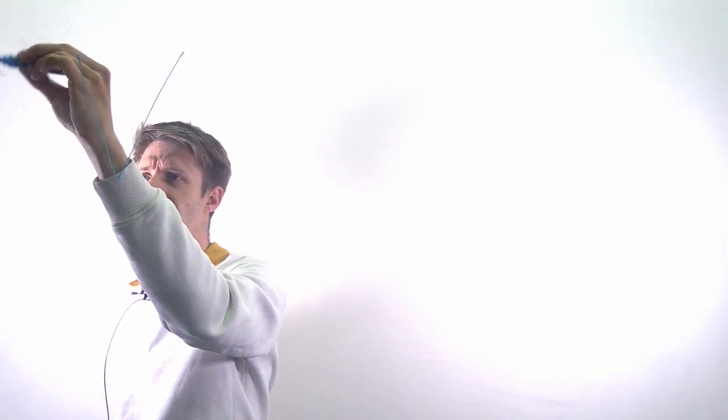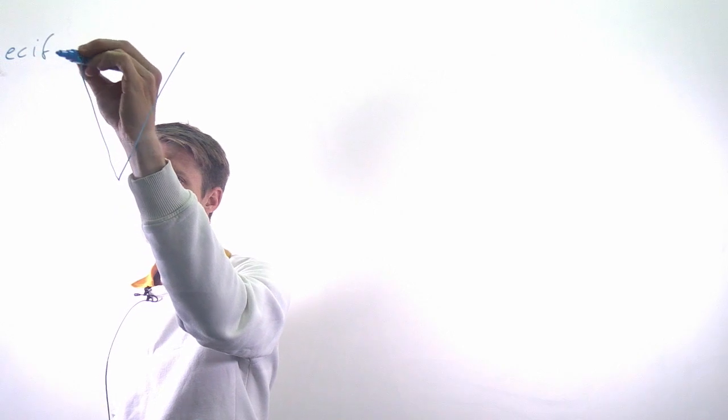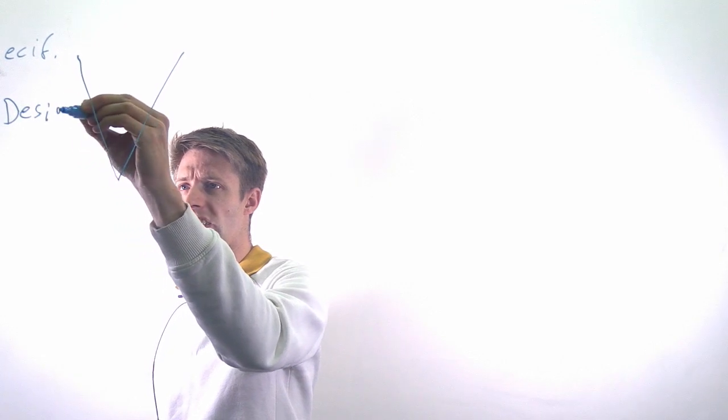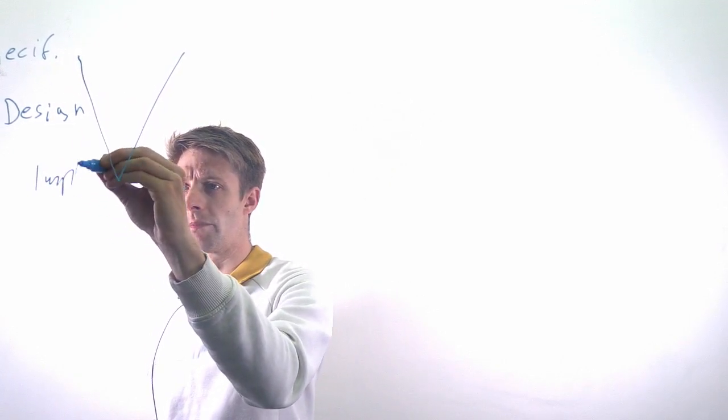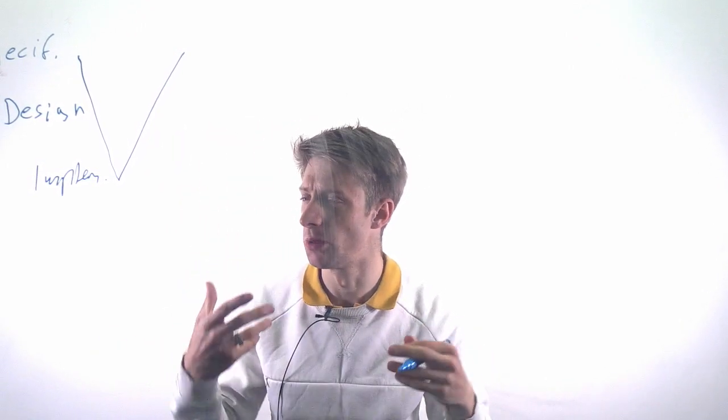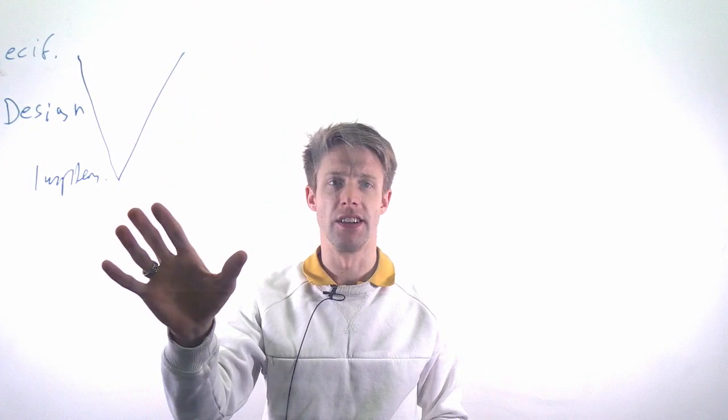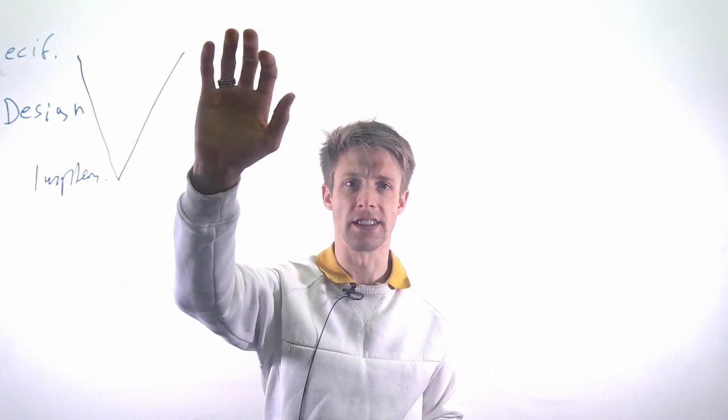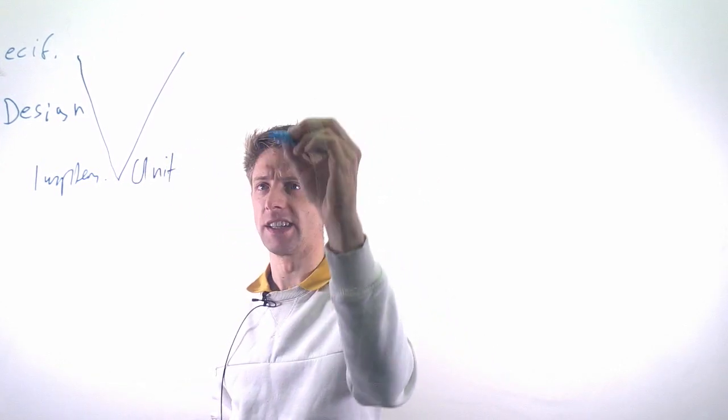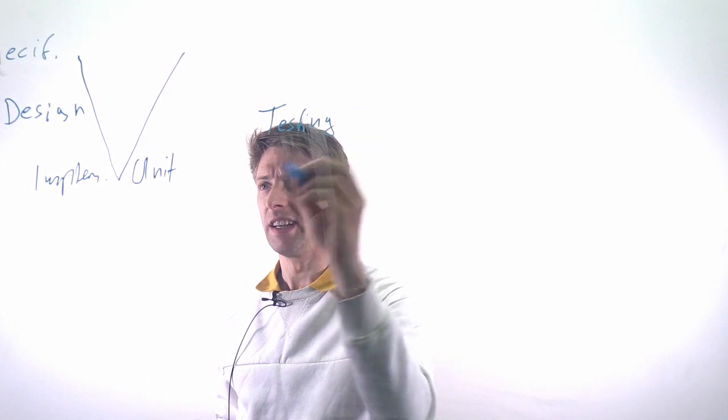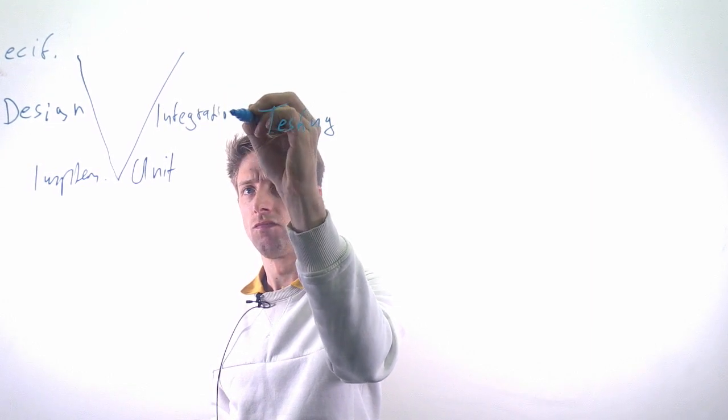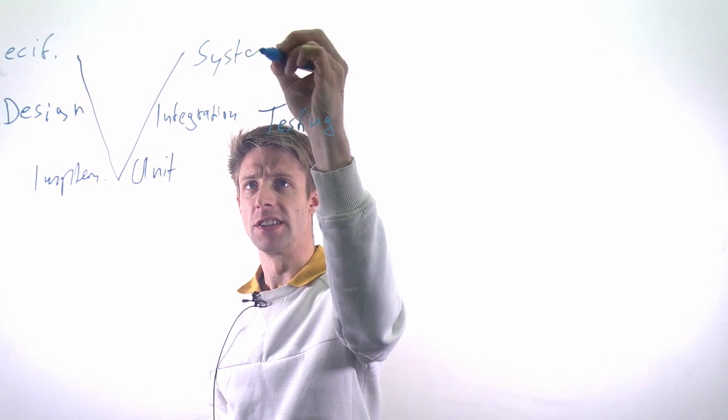So you have the specification on top, so you specify your requirements, your goals of the system, then you design, you build an architecture, and then you implement. So those are your system activities, what are you going to produce, and then on the right side of the V you have the corresponding testing quality assurance activities. And usually down here you have something that is called unit testing. In the middle you have integration testing, and on top you have the system testing.